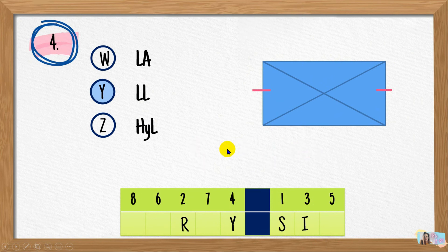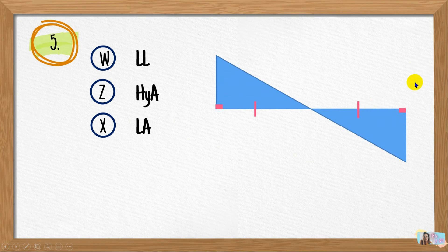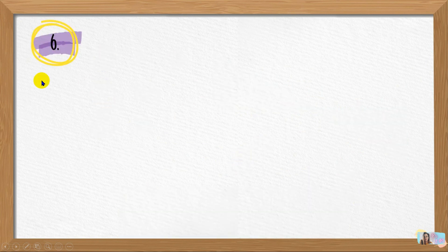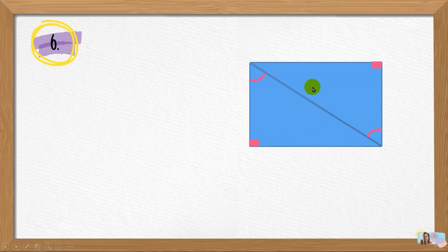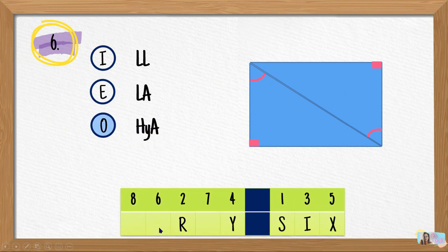We're getting close to forming the number of chromosomes for a normal human being. Number five: we have a leg that is congruent, and by the vertical angles definition, two acute angles are also congruent — leg and acute angle. So the answer is X, applying the LA congruence theorem. Number six: the two right triangles have an overlapping hypotenuse and congruent acute angles — so we apply HYA. The answer for number six is O.